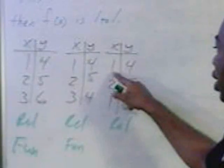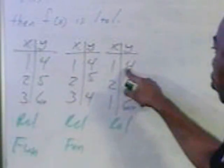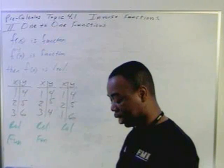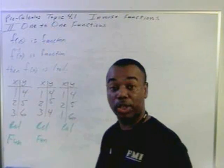This guy right here, one has two outputs. One has an output of four, and then one has an output of six. So, this one is not a function. It's a relation, but it's not a function.